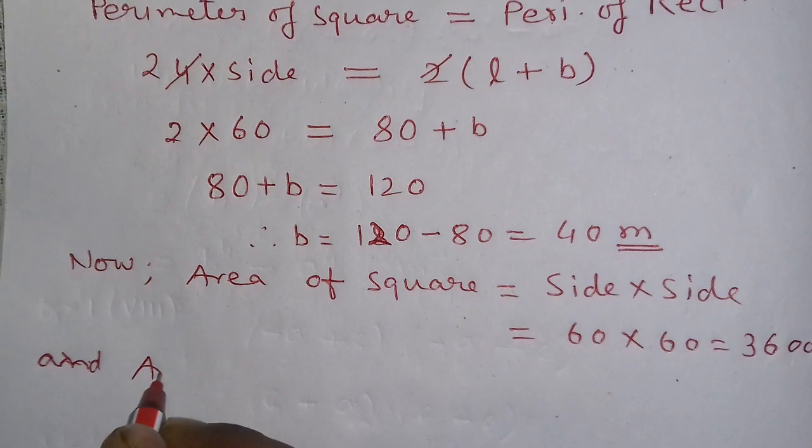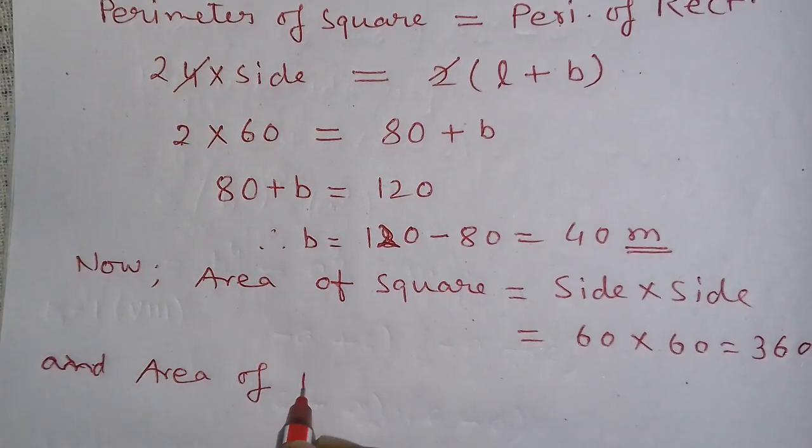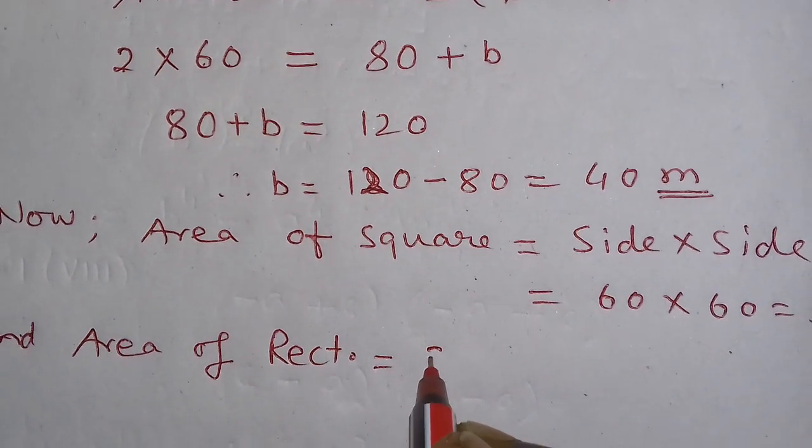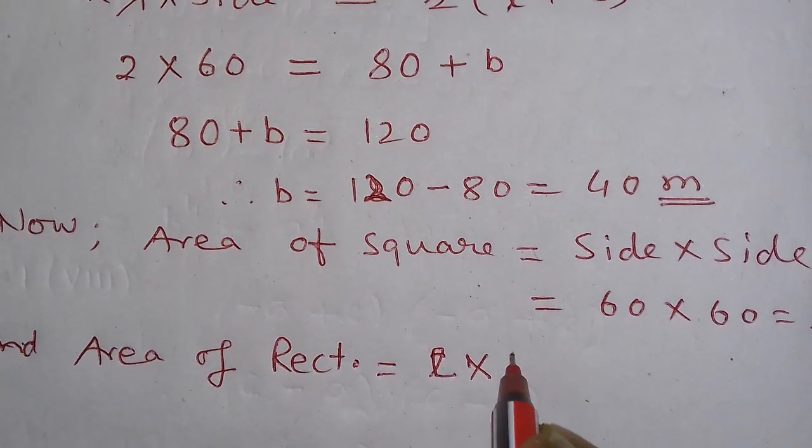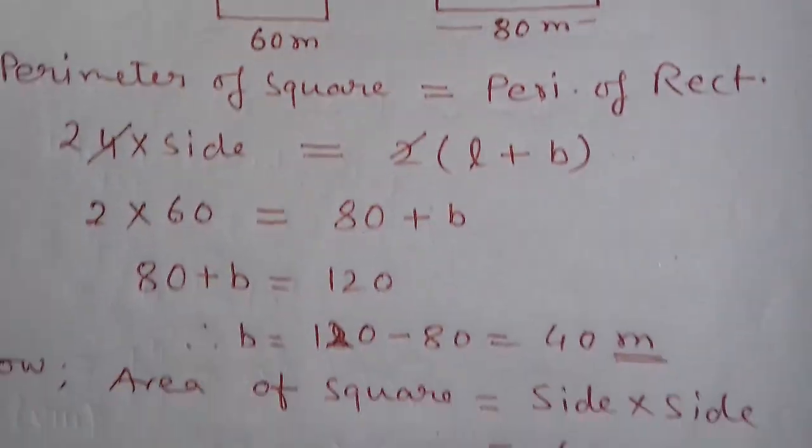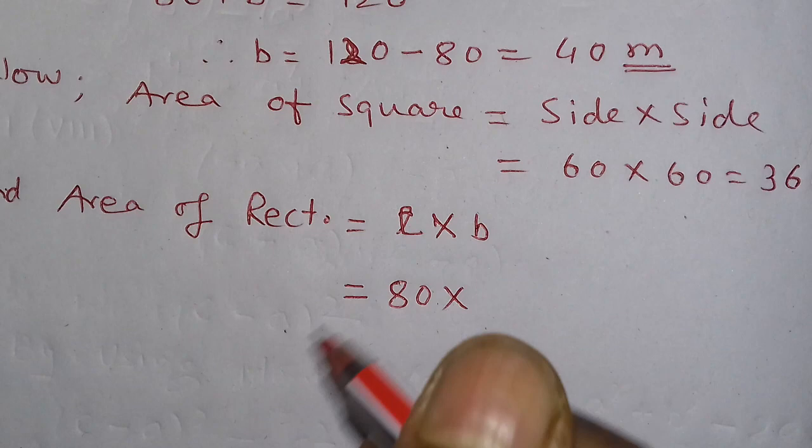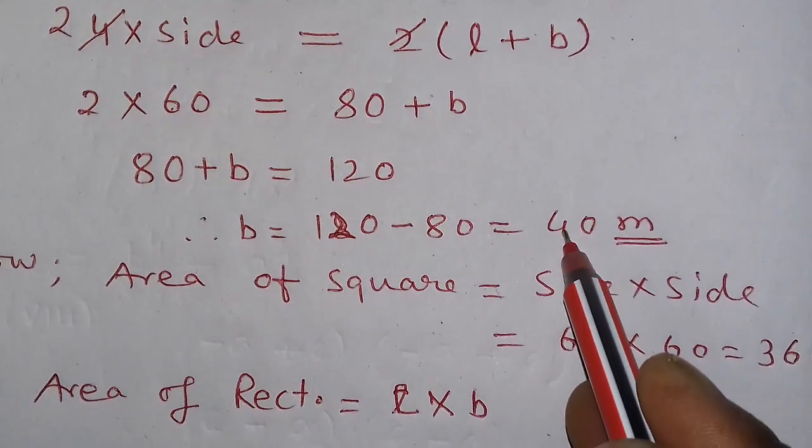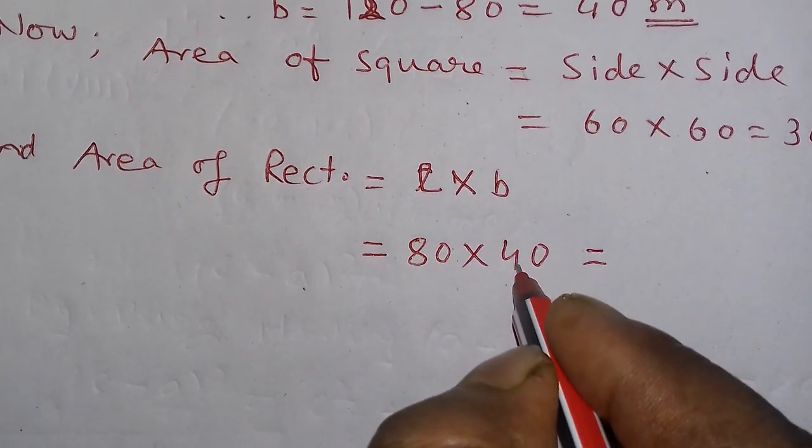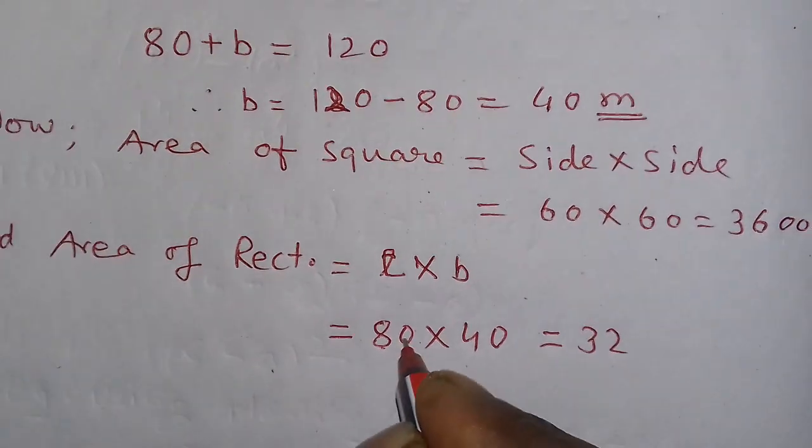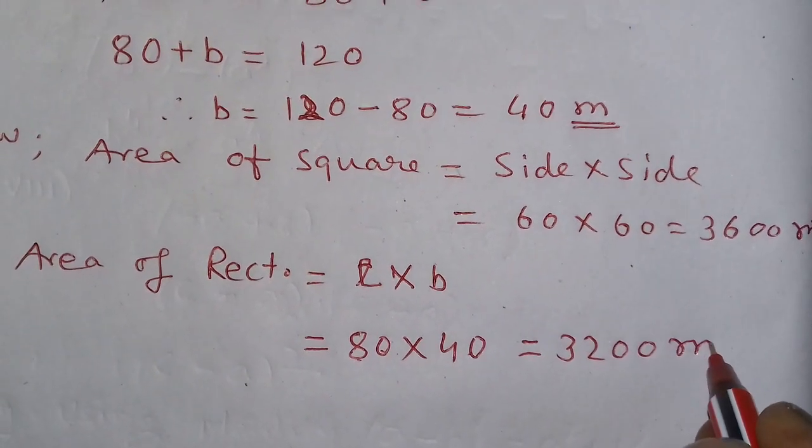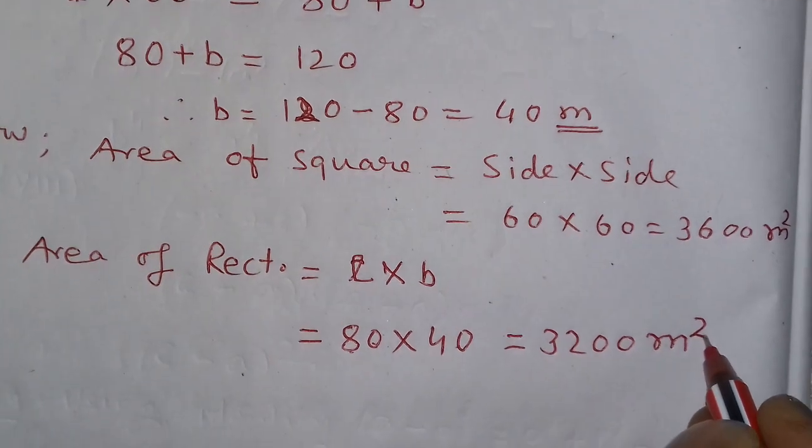And area of rectangle equal to l into b. Length of rectangle is 80 meter and breadth of rectangle we find here 40 meter. So what is the value? 8 fours are 32 and 2 0 is placed at this place, and unit of area is meter square.